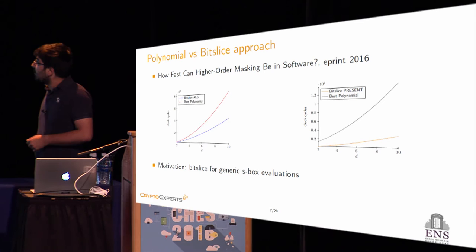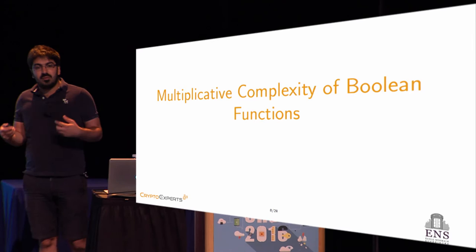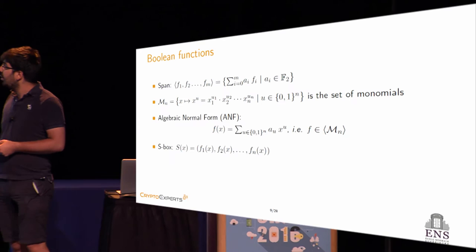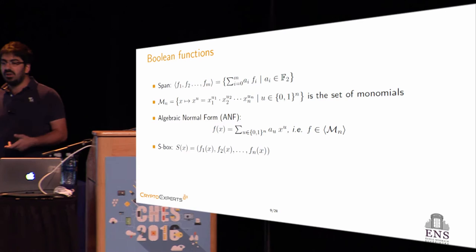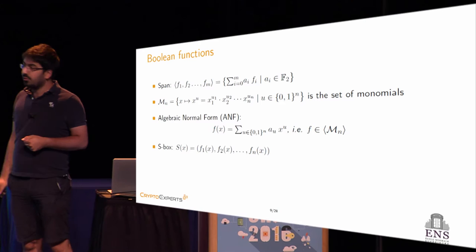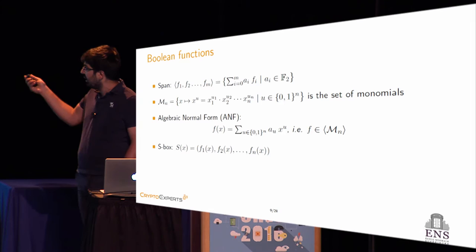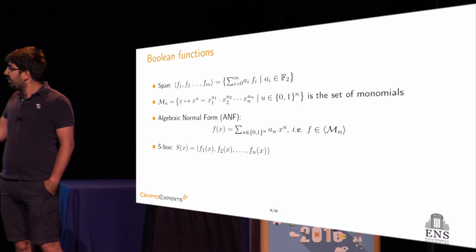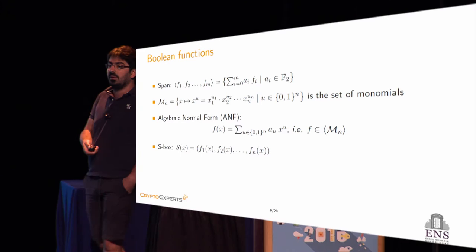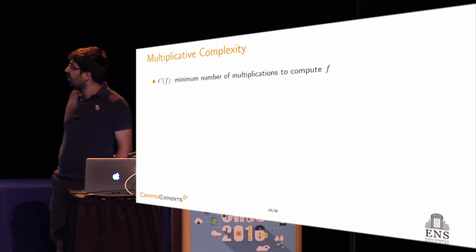With the bit-slice approach, we look at the S-box through Boolean functions. We call the span of a set of Boolean functions all possible linear combinations of elements of that set. We denote by M_N the set of all monomial functions. We can represent every Boolean function with its algebraic normal form, which simply consists of looking at the Boolean function as an element of the span of the monomial functions. An N-bit S-box can be seen as N coordinate functions, where each coordinate function is a Boolean function. We define the multiplicative complexity of a Boolean function as the minimum number of multiplications needed to compute it.